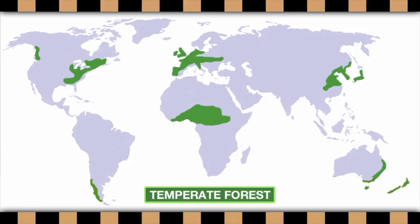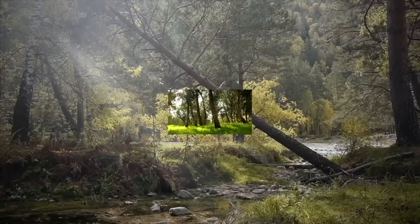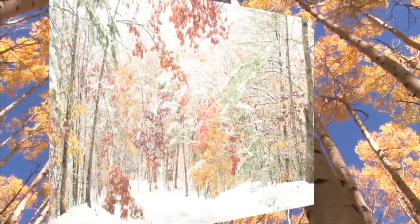The next type of forest habitat is the temperate forest. Temperate forests are found on the North American continent, South America, Europe, Africa, Asia, and Australia too. A temperate forest has four seasons: spring, summer, autumn, and winter.